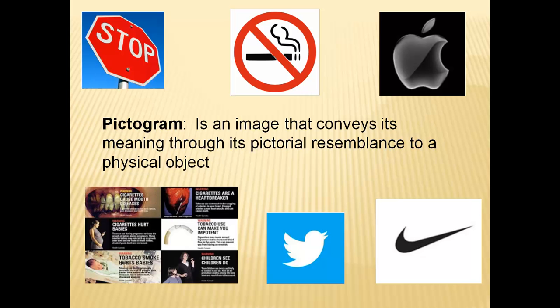A sign with a simple picture of a school bus conveys the more complex message not only that a school bus is likely to go down the road, but also that drivers should be alert to the possibility that children might walk across the road. In this slide, we see a stop sign, a no smoking sign, the Apple logo, cigarette health warning labels, the Twitter logo, and the Nike logo. These are all everyday symbols that easily convey messages to us all.